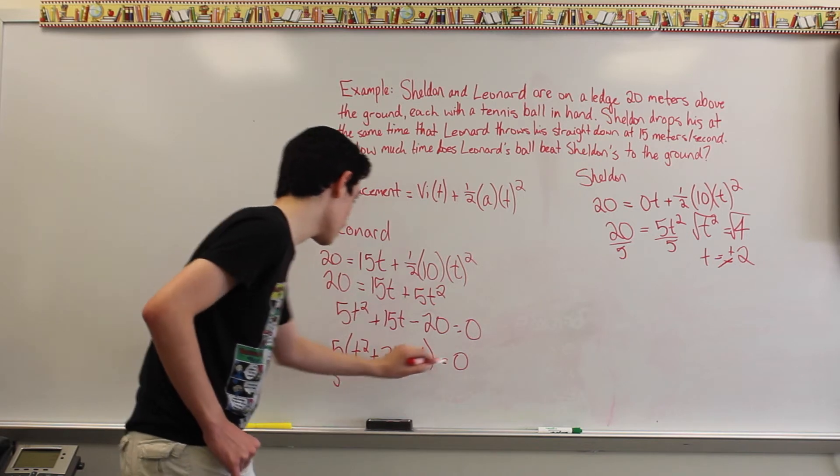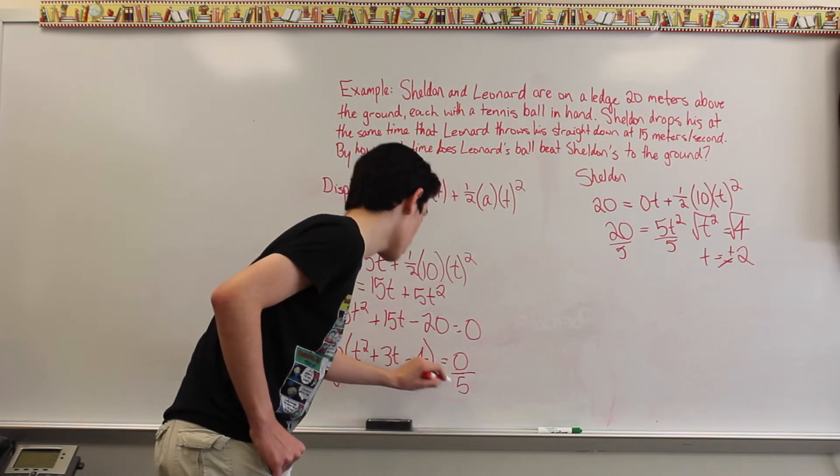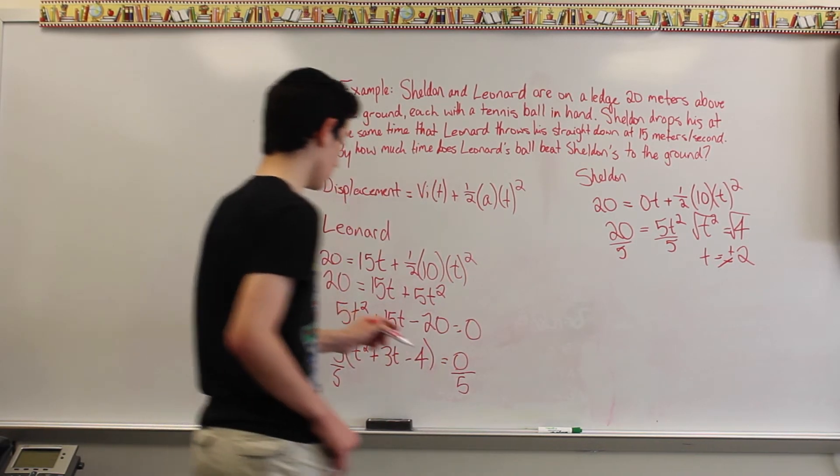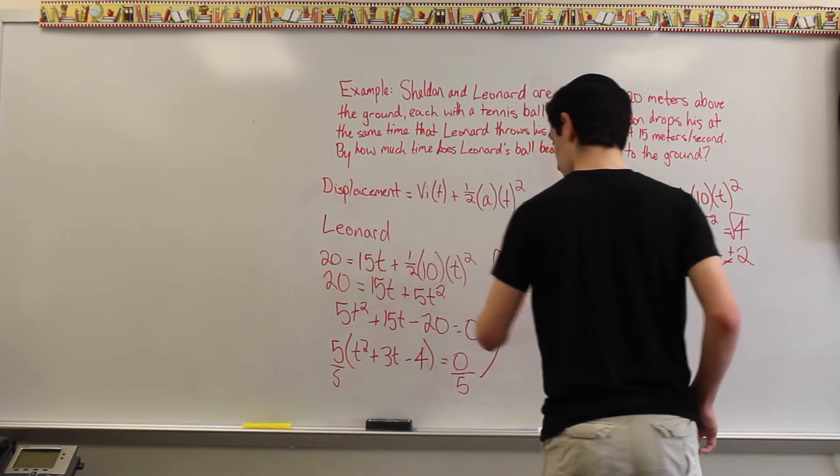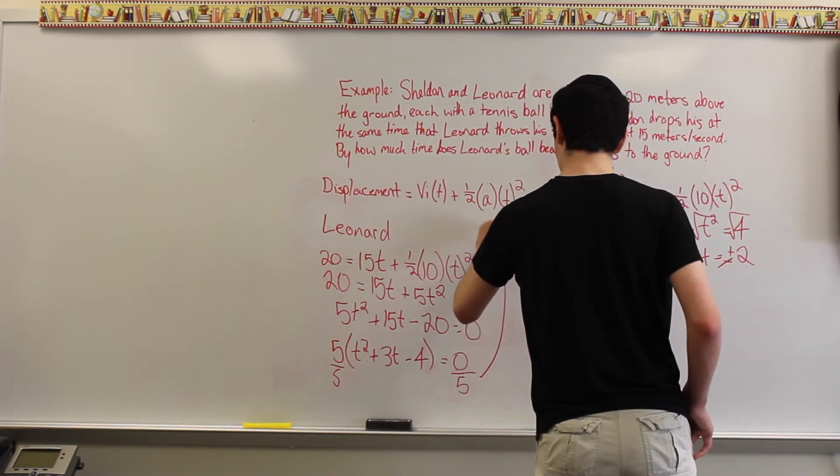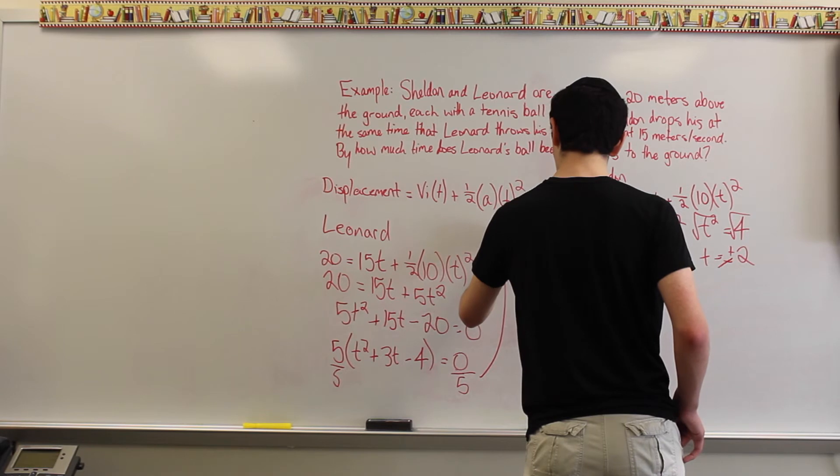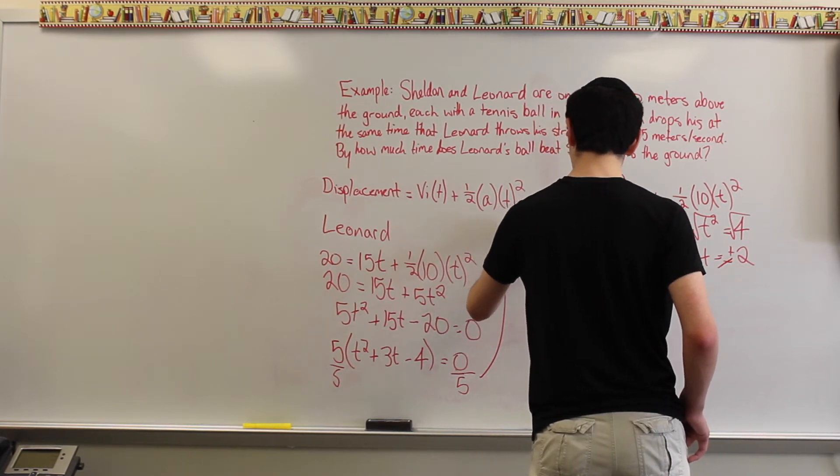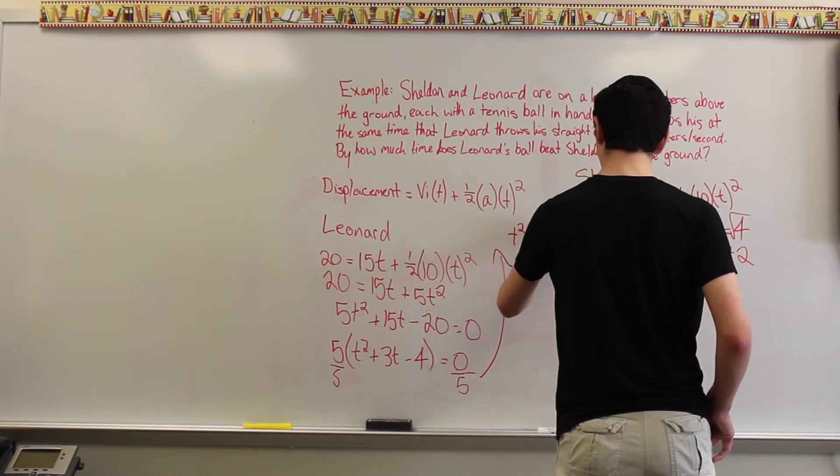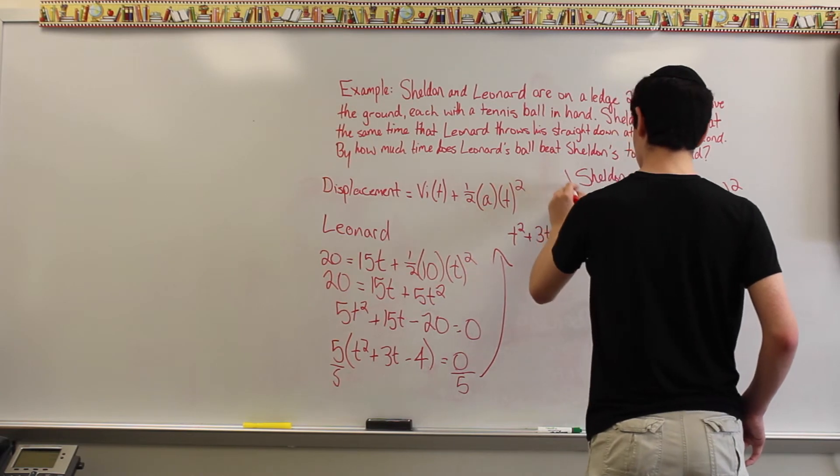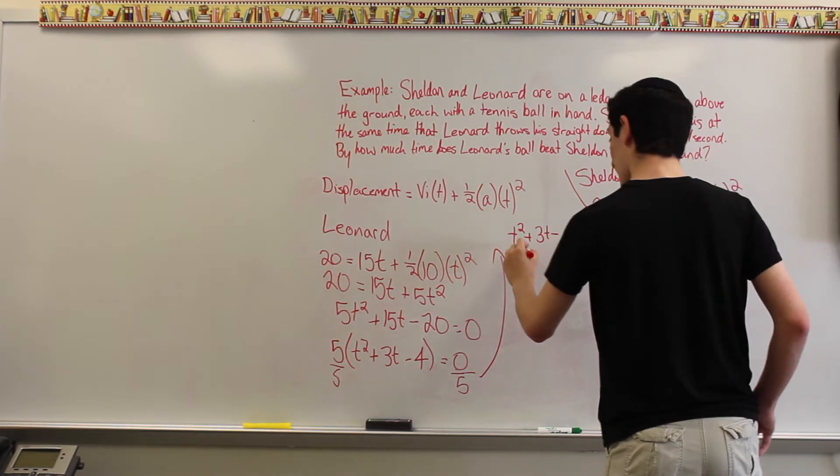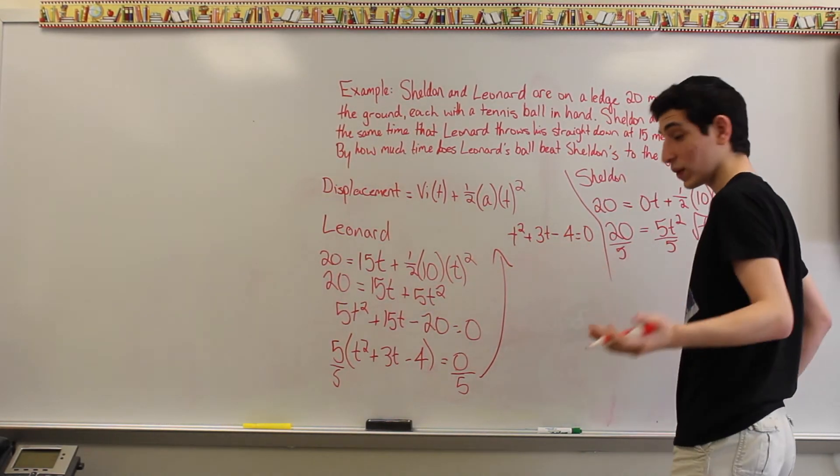And then you can just divide from both sides. So, let's move this up here. T squared plus 3t minus 4 equals 0. And, in order to do this, we have to factor.